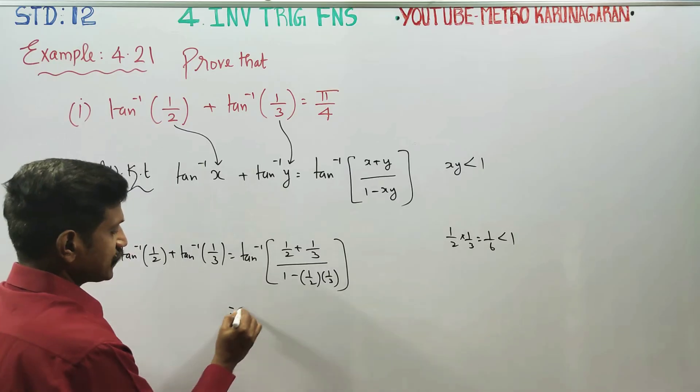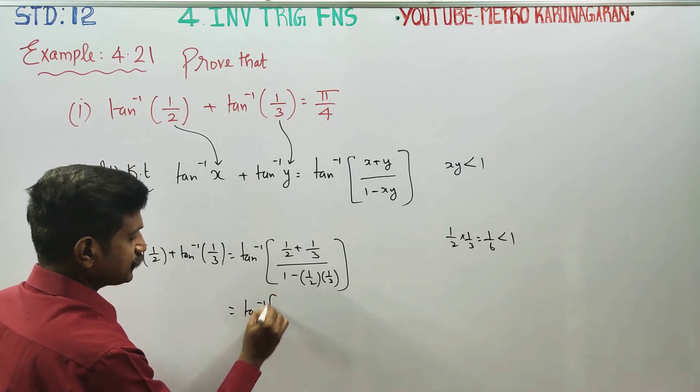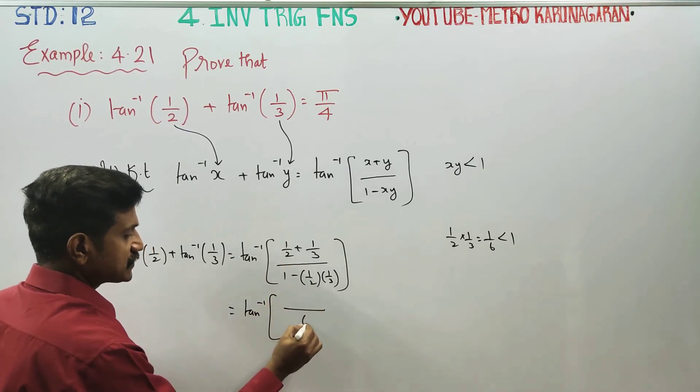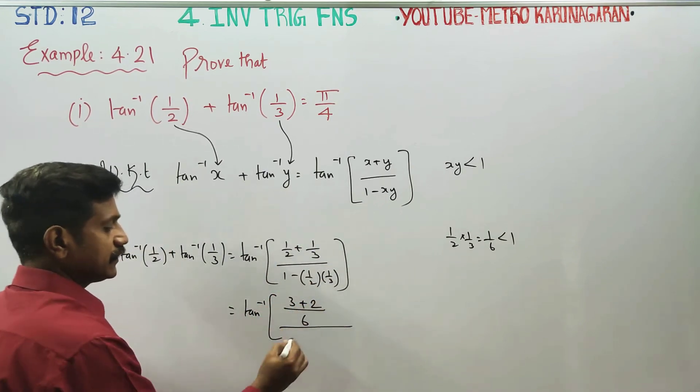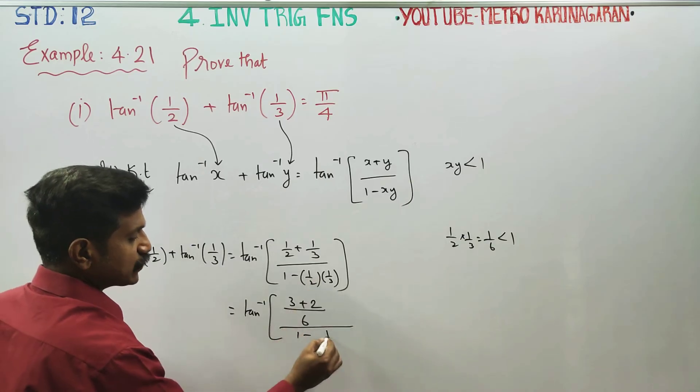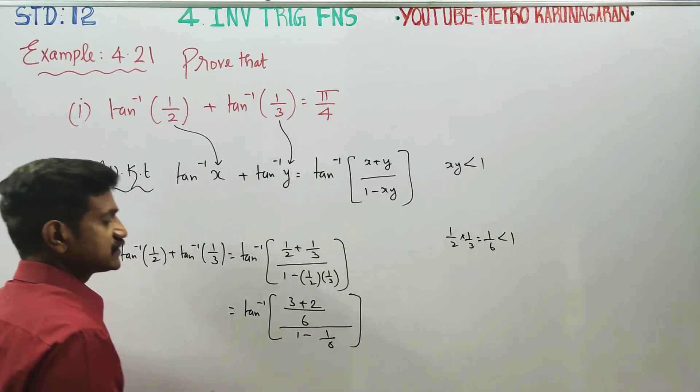Is equal to tan inverse of, your LCM is 3 to the 6. 3 cross multiply item, 2 cross multiply item, by 1 minus 1, 1s are 1, 2 3s are 6.